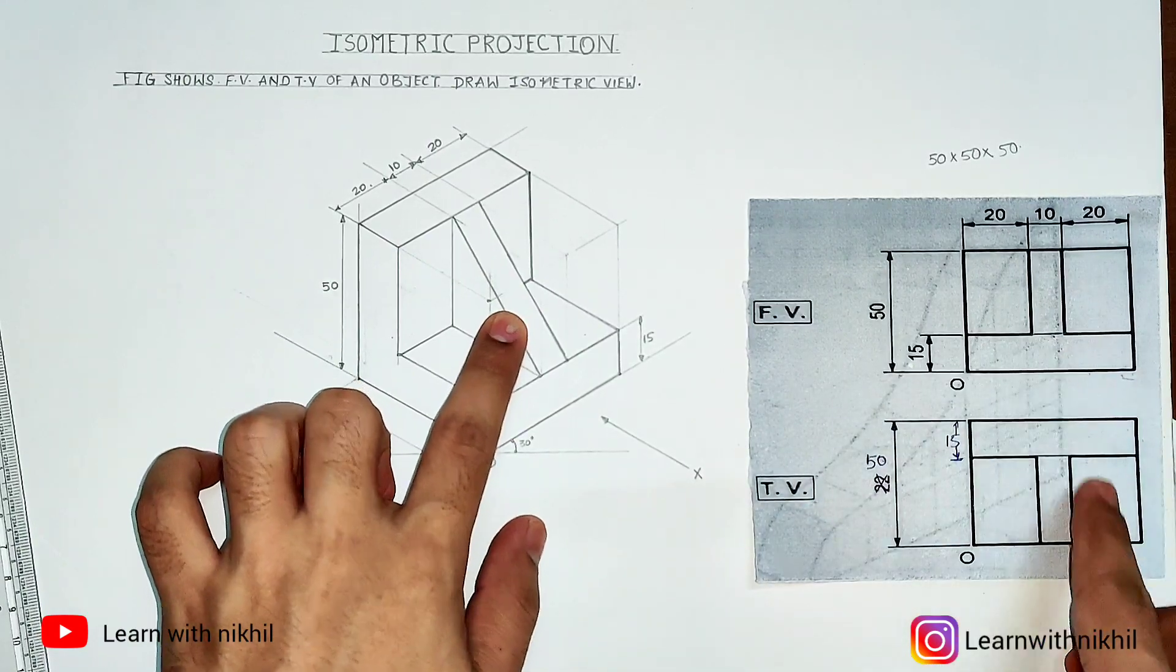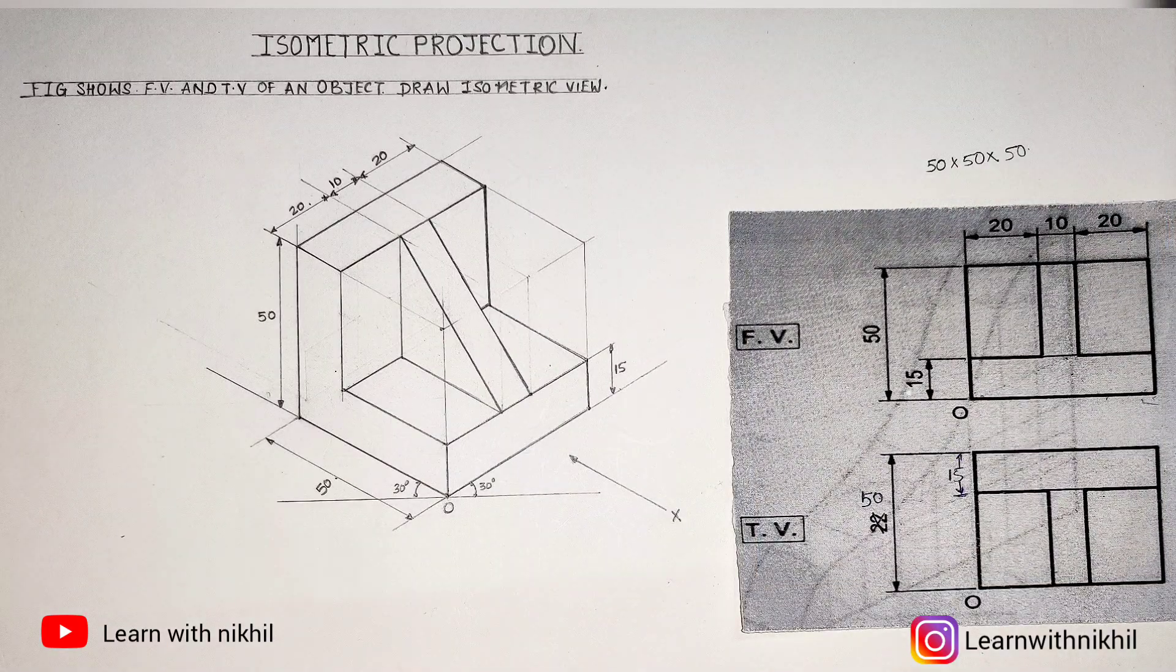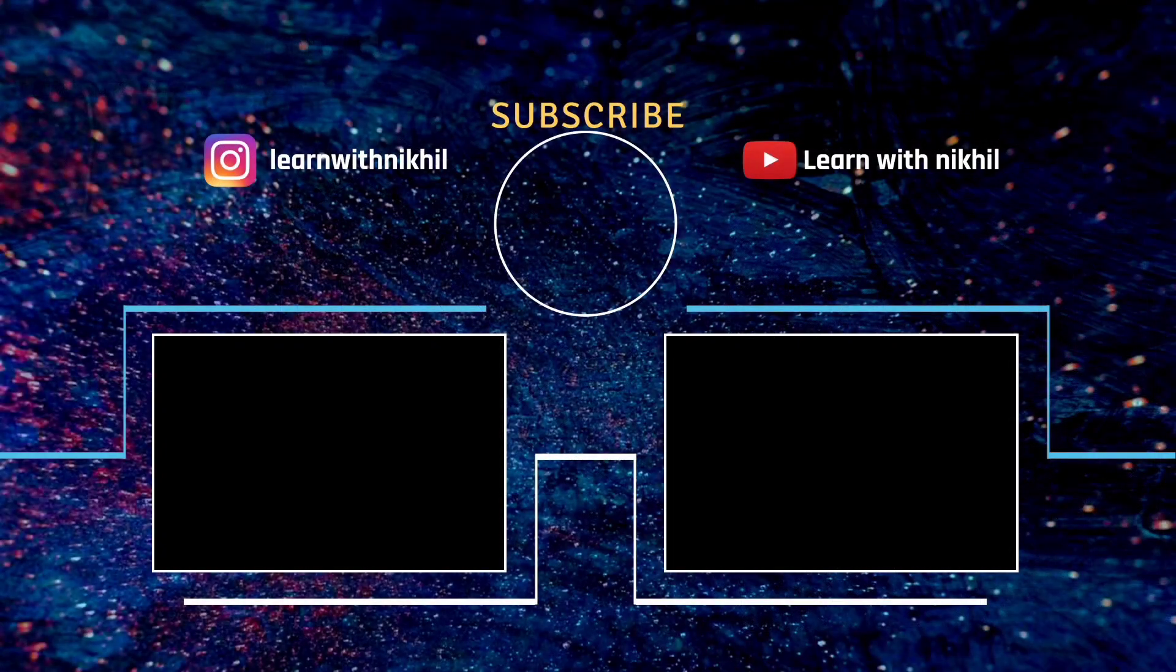As you can see, the slant line looks like a rectangle from the front and the top view. Thank you for watching. Do subscribe to my channel, hit the bell icon too. See you in the next lecture.